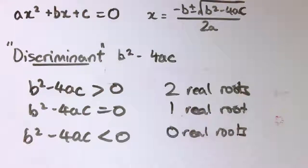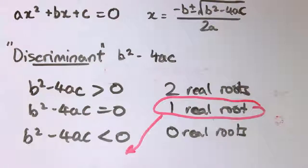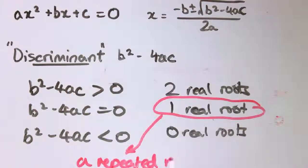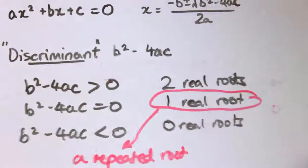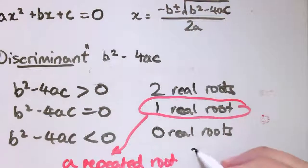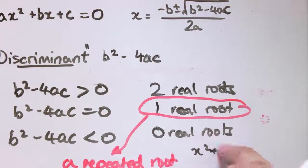Now in this case, one real root, sometimes that will be phrased as having a repeated root. And the reason it's called a repeated root is that comes about from expressions like the one we just looked at, which was x squared plus 2x plus 1 equals 0.